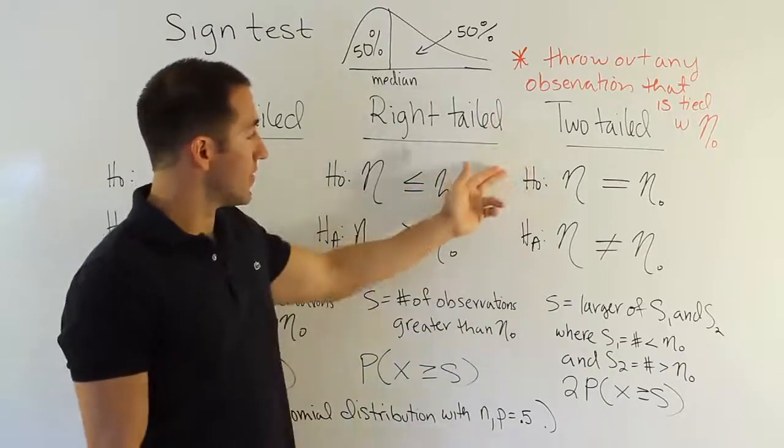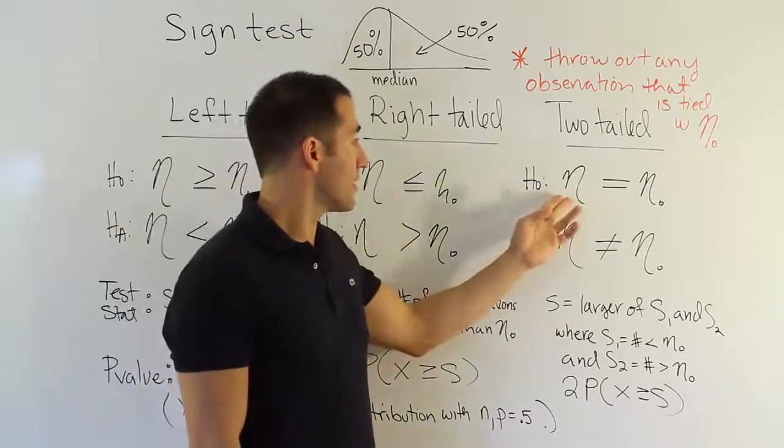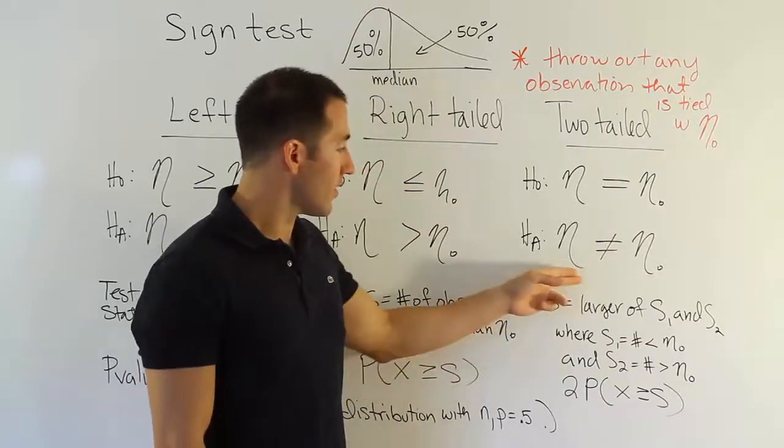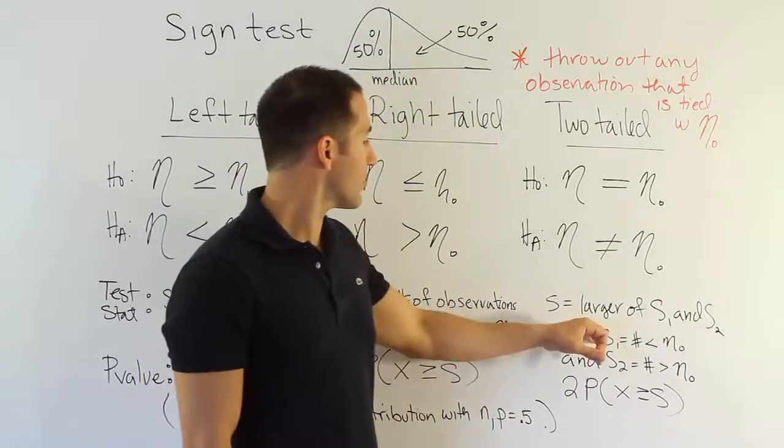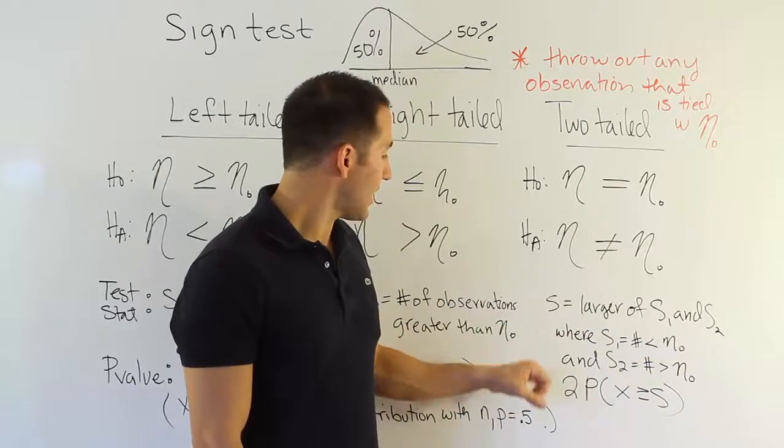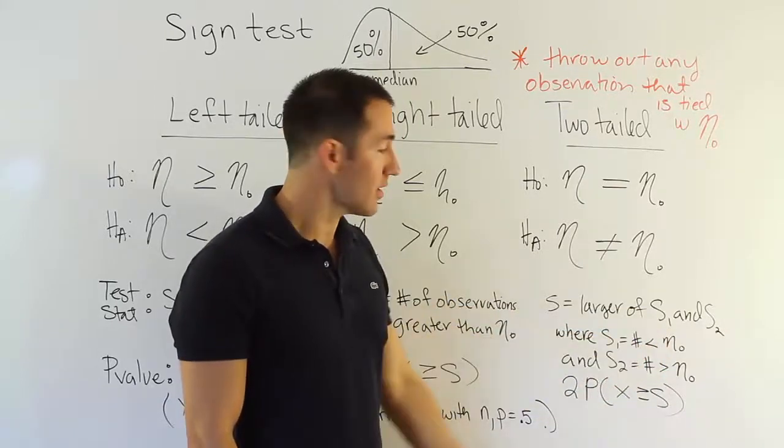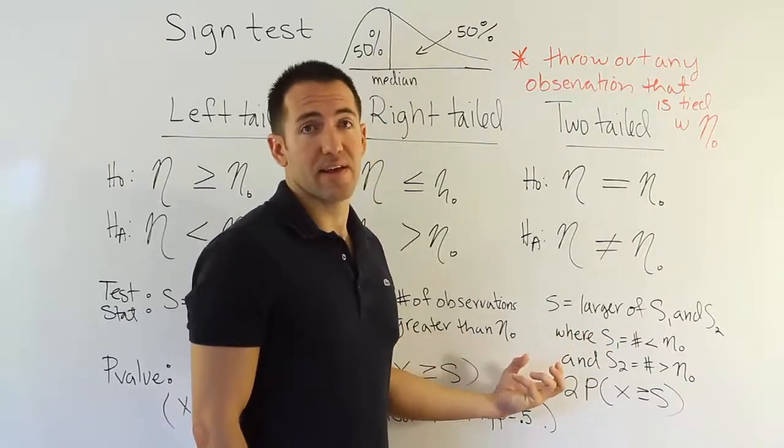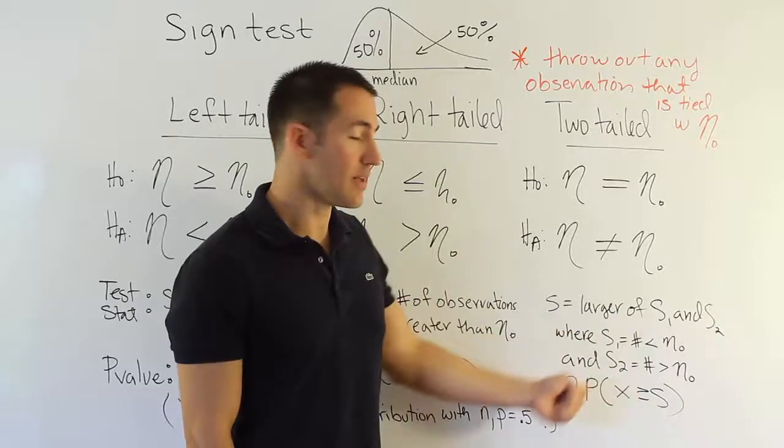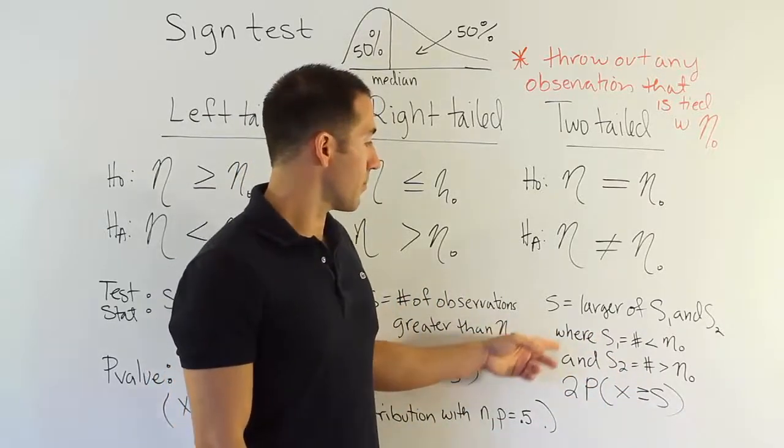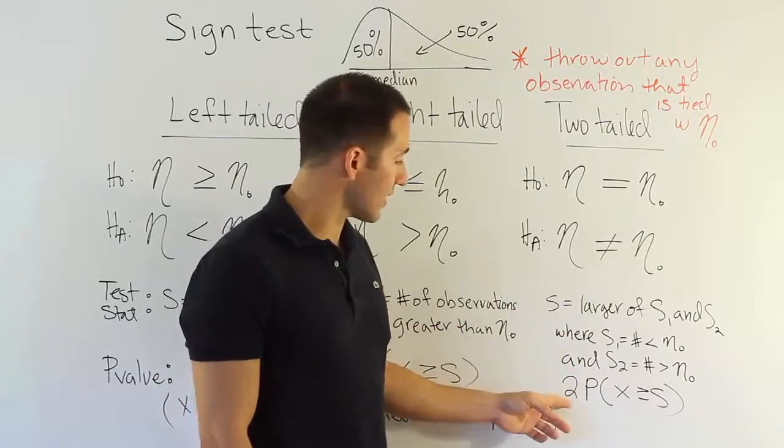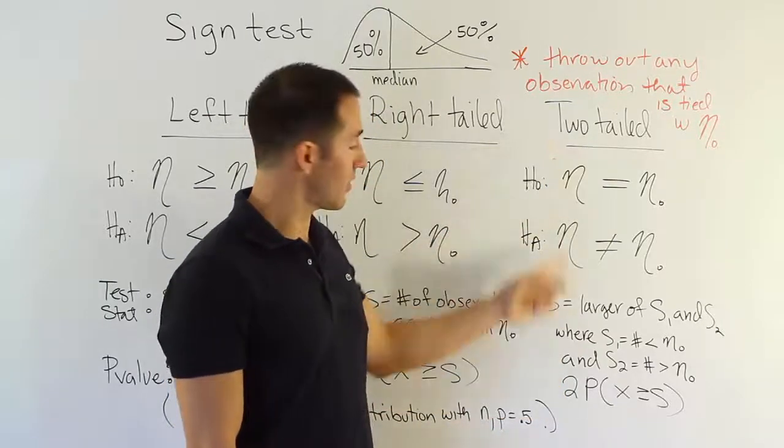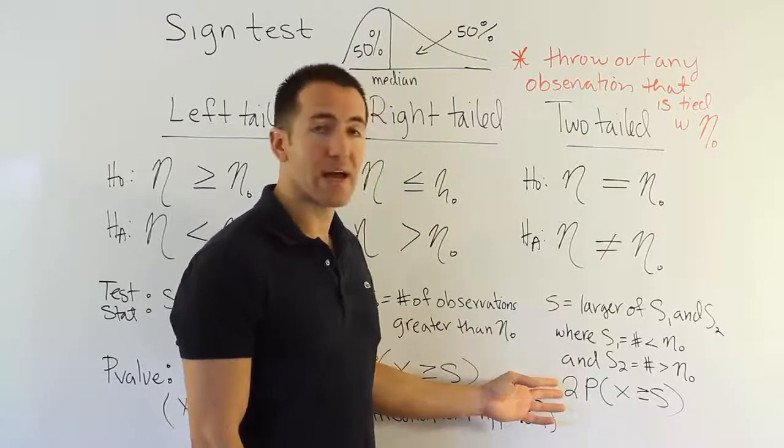Okay, and then the other unique scenario is the two-tailed case. The two-tailed case involves, basically, the median is equal to a number versus it's not equal to a number, and your test stat is a little bit different. It says it's the larger of S1 and S2, where you define S1 as, basically, the number of observations less than the hypothesized median, and S2 is the number of observations greater than the hypothesized median. Of course, you see there is no equal to there because we're still throwing out the ties. So you count how many times you waited less, let's say, than 10 minutes at Taco Bell. You count how many times you waited more than 10 minutes, and then from there, you would pick the larger of those two numbers as your test stat. And once you have that, you still use the same p-value, basically, but you multiply it by two because it's a two-tailed case. That's another thing that people miss all the time on the two-tailed scenario. They forget to multiply by two.